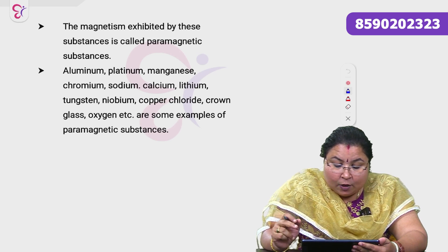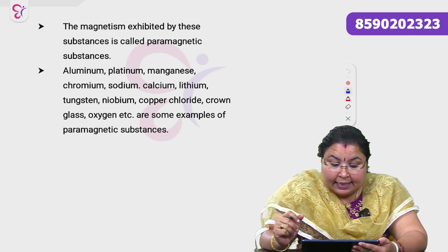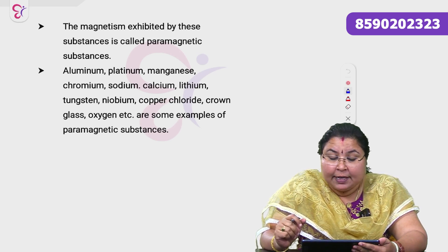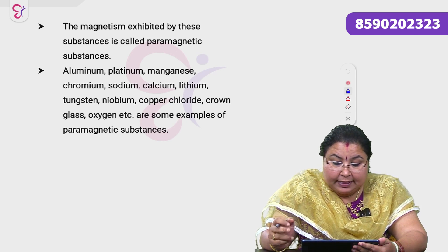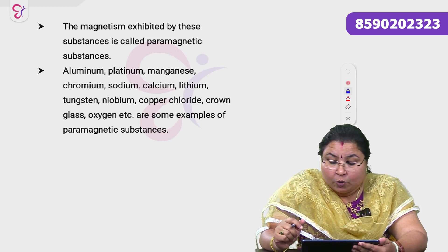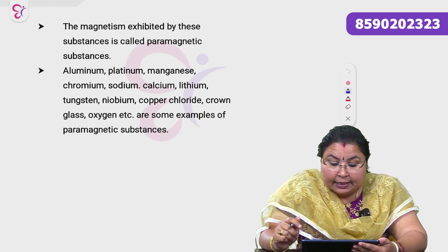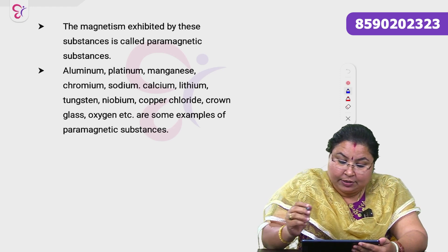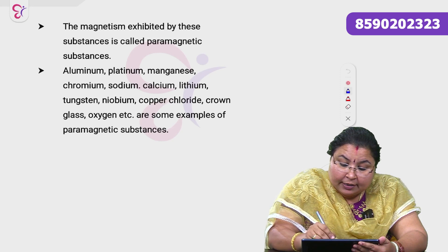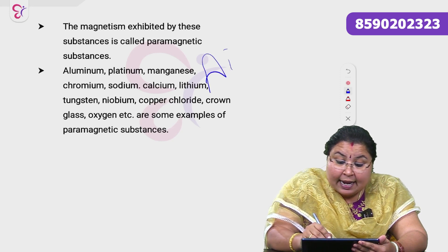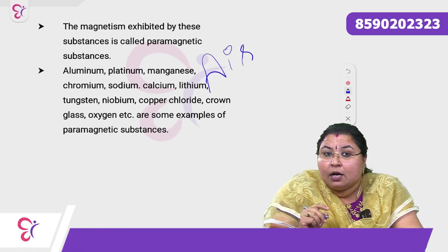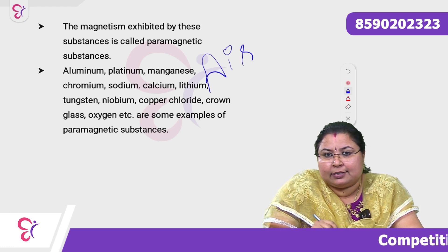Examples of paramagnetic substances include: Aluminium, Platinum, Manganese, Chromium, Sodium, Calcium, Lithium, Tungsten, Niobium, Copper Chloride, Crown Glass, and Oxygen. Air is an example of a paramagnetic substance, whereas water is an example of a diamagnetic substance.